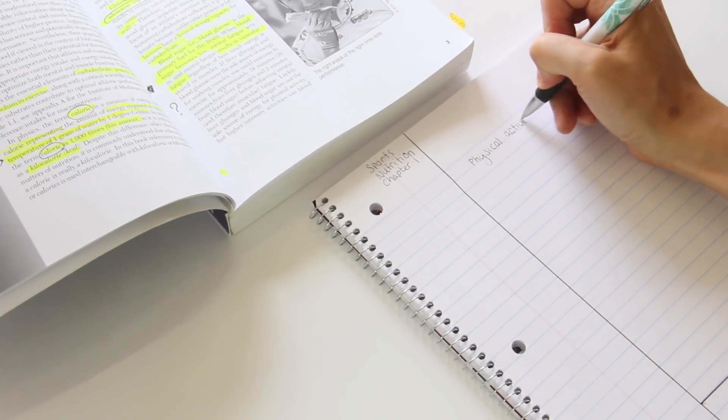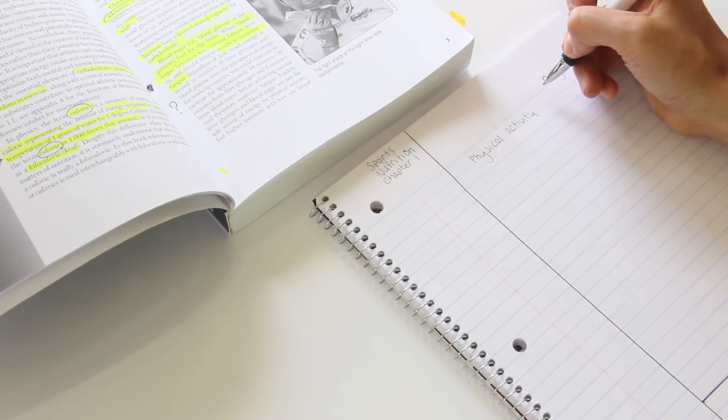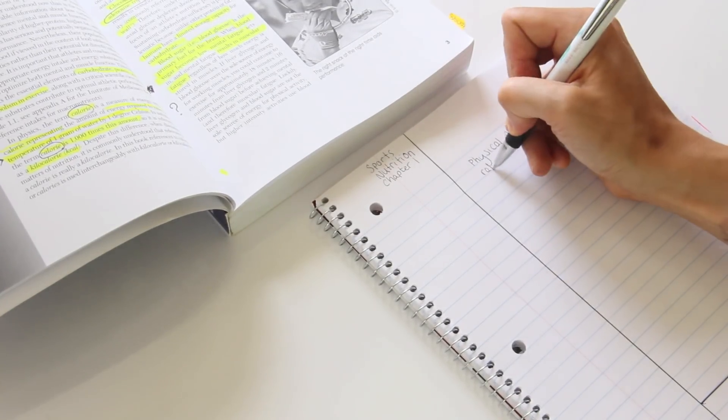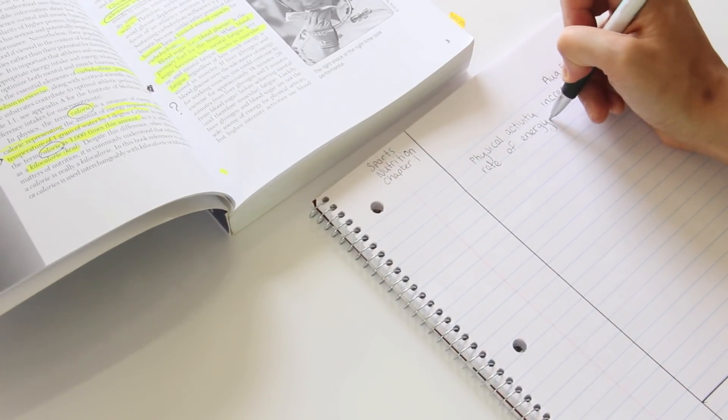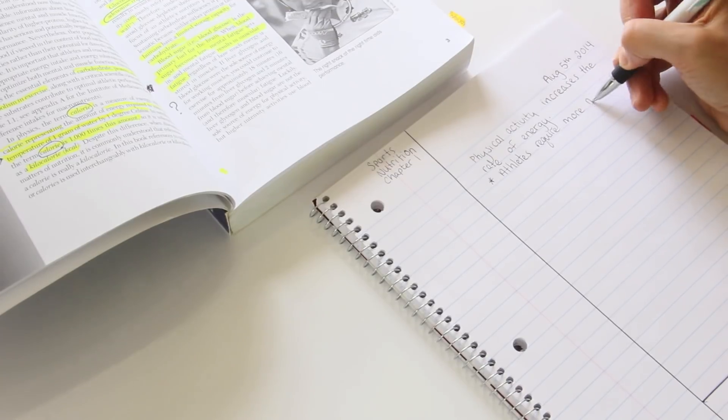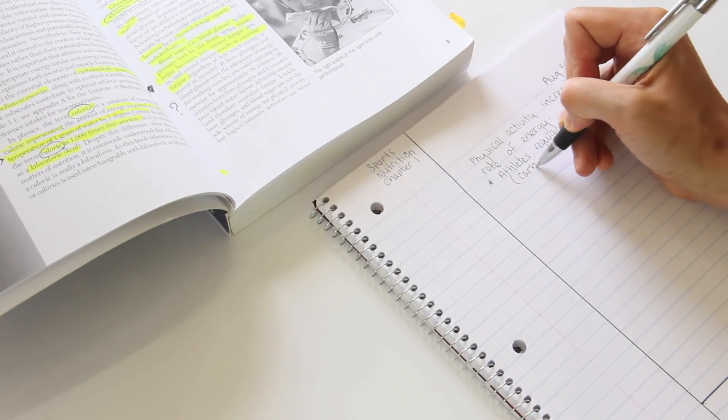Now here's where the six steps comes in. We're going to record all of the information that is said during the class. Maybe you're looking at a PowerPoint, going through a book, or your teacher is simply just giving a lecture. You're going to write down as many facts and ideas as you can in this section.